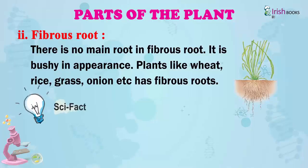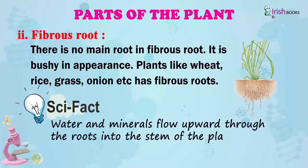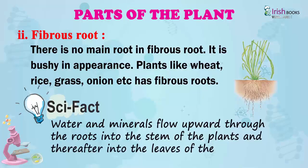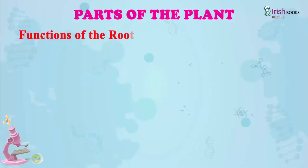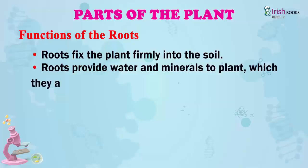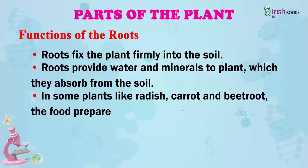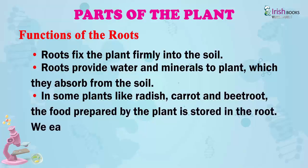Scientific fact: water and minerals flow upward through the roots into the stem of the plant and thereafter into the leaves. Functions of the roots: roots fix the plant firmly into the soil. Roots provide water and minerals to the plant which they absorb from the soil. In some plants like radish, carrot and beetroot, the food prepared by the plant is stored in the root. We eat these roots.